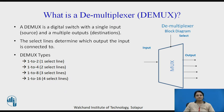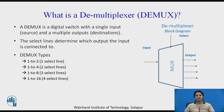A demultiplexer is exactly opposite to a multiplexer. In a multiplexer, there are many inputs and one output. In a demultiplexer, there is one input and many outputs — one of those outputs is selected to transfer the data. A demultiplexer is a digital switch with a single input (source) and multiple outputs (destinations), with a select line to determine which output is active. Demultiplexers also come in types: 1-to-2, 1-to-4, 1-to-8, and 1-to-16.